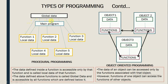The data which is defined above these functions is called the global data, and this global data is accessible to all the functions declared below it. In object oriented programming, we can see that an object contains data and the functions which work on this data into one single independent entity. All data in the objects is hidden and secured and accessible to the objects only. However, functions of one object can access the functions of other objects — that is, the functions of objects can interact among themselves.